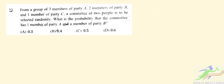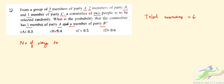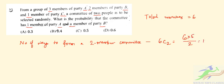Question number 22: from a group of three members of party A, two members of party B, and one member of party C, a committee of two people is to be selected randomly. What is the probability that the committee has one member of party A and one member of party B? Total members are six. Number of ways to form a two-member committee is 6C2, which equals 15.